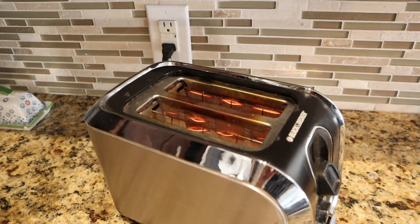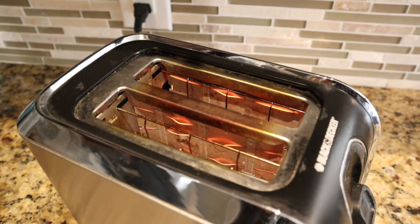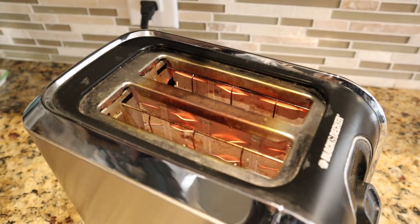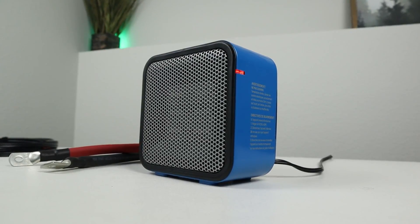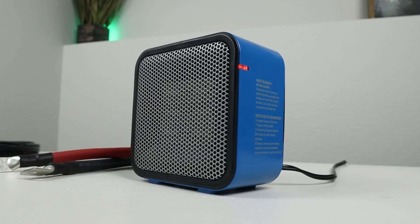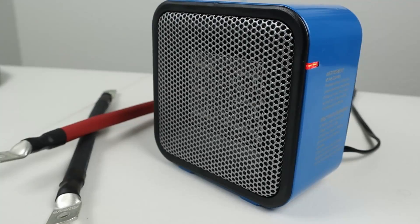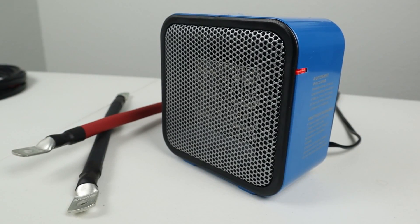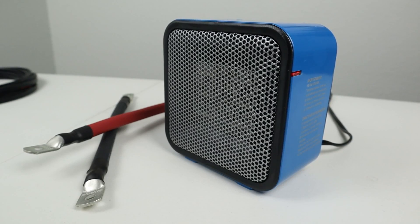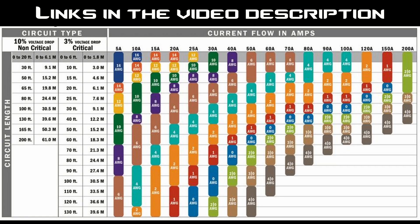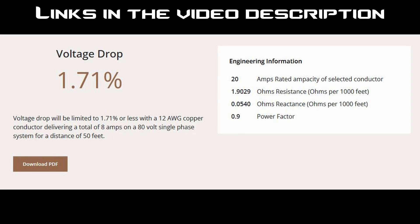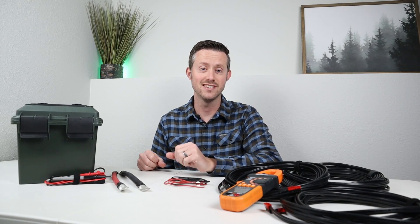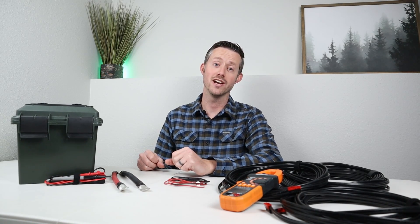An example of using resistance to create heat is a toaster oven — they pass a lot of amperage through small wires and that creates heat to toast your bread. An electrical heater also uses resistance, converting power into heat to warm your room. With solar wires, we do not want to convert our energy to heat, so we have to make sure we're using the proper wire size. Luckily there are a lot of online resources about how many amps can go through each size of wire, and voltage drop calculators — I'll include a link in the video description.